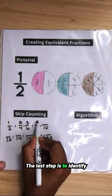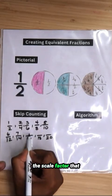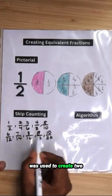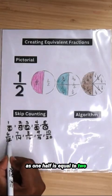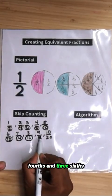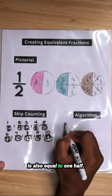The last step is to identify the scale factor that was used to create two equivalent fractions such as 1 half is equal to 2 fourths and 3 sixths is also equal to 1 half.